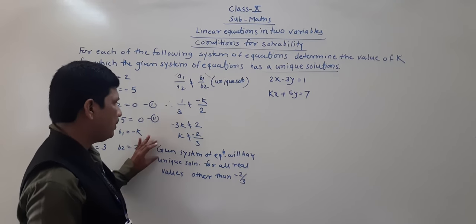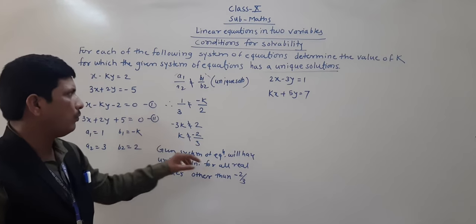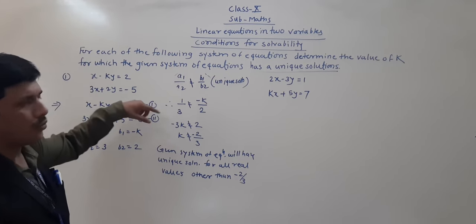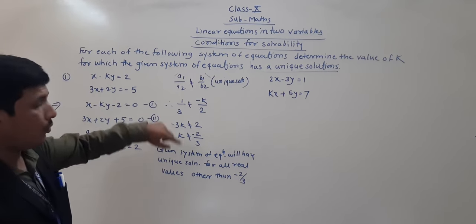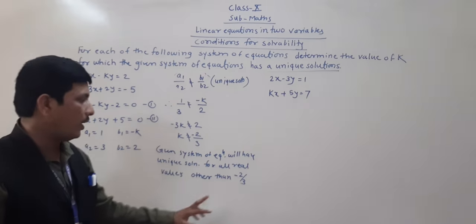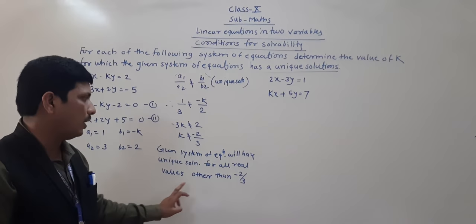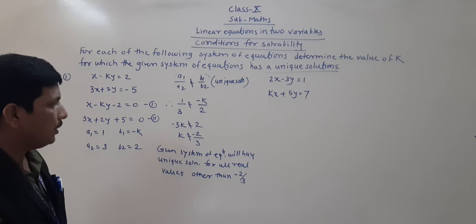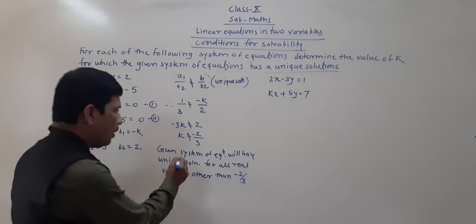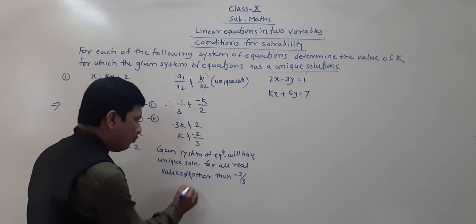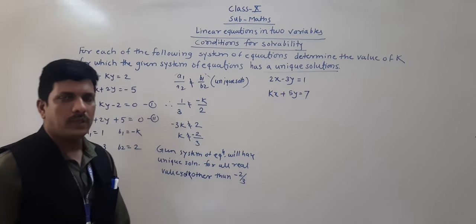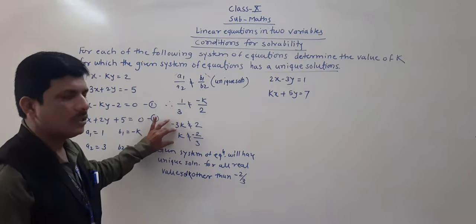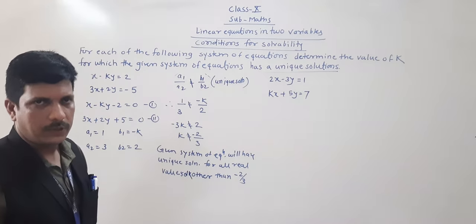So in conclusion: the given system of equations will have a unique solution for all real values of k other than minus 2 by 3, because k is not equal to minus 2 by 3.